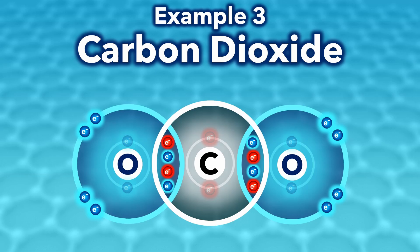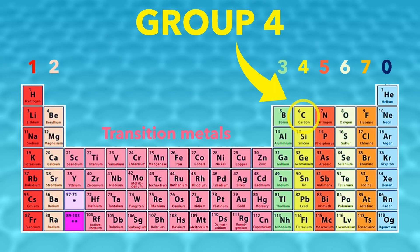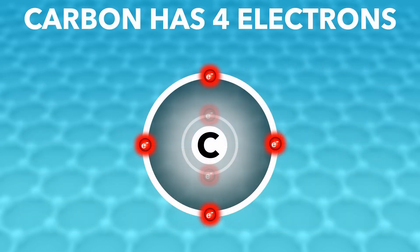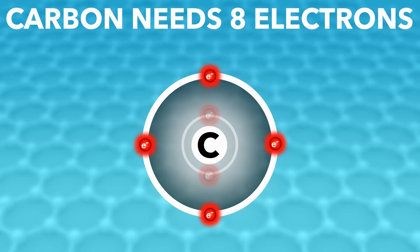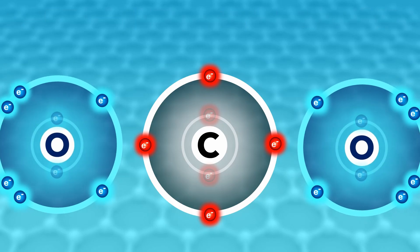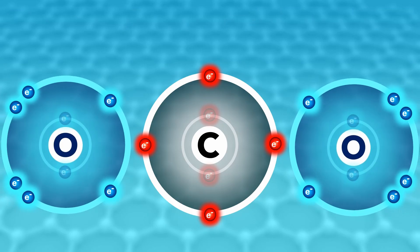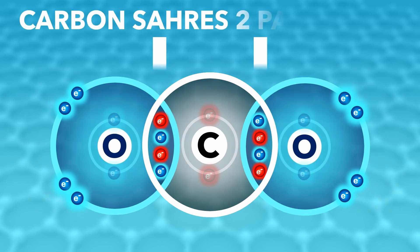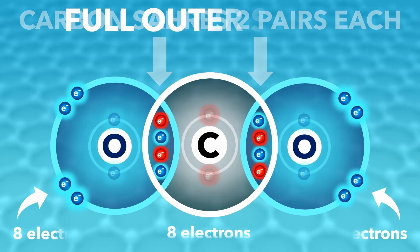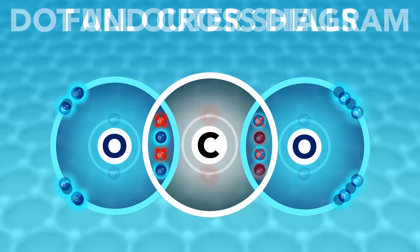The third example is carbon dioxide. Carbon is in group four, so it has four electrons in its outer shell and needs eight to be full. Oxygen as before has six and also needs eight. Carbon creates two bonds with each oxygen atom so that all the atoms have full outer shells. And here's the dot and cross diagram.